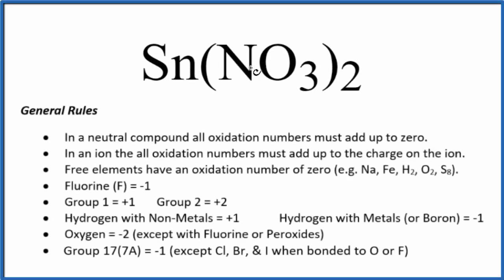To find the oxidation numbers in Sn(NO3)2, this is tin(II) nitrate, we'll use these rules here. Since we don't have a minus or plus sign afterwards, we know this is going to be a neutral compound, and all the oxidation numbers will add up to zero.